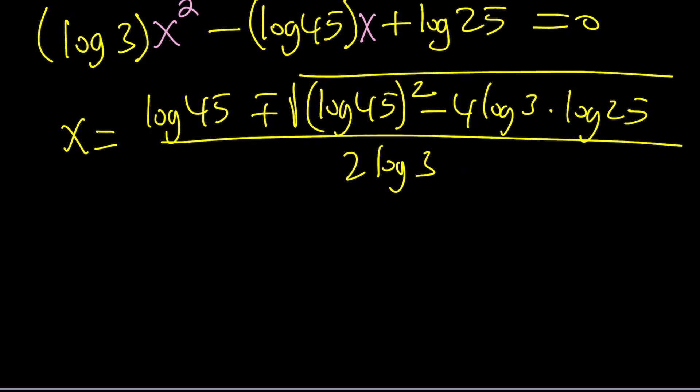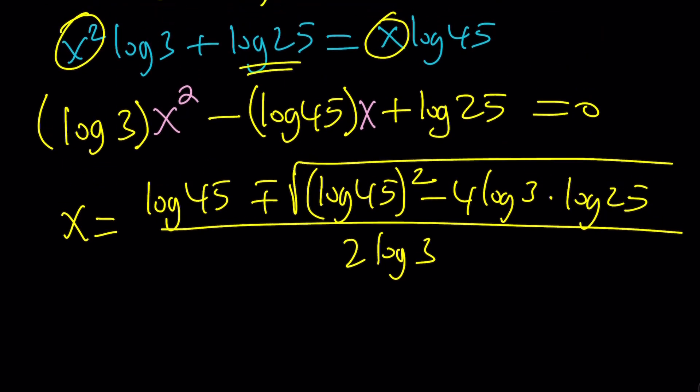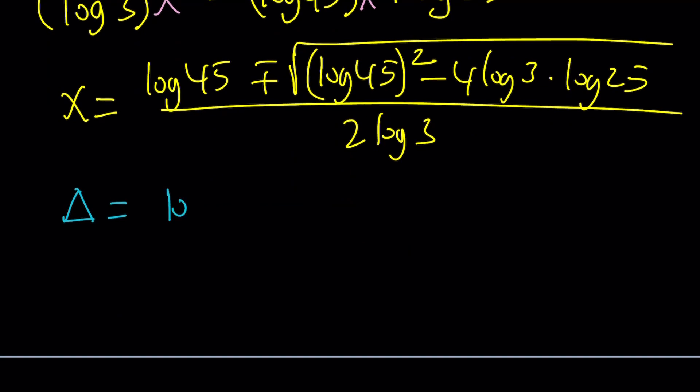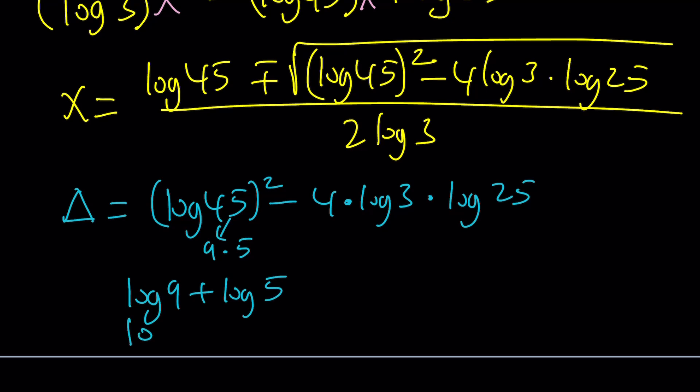At this point, this looks pretty complicated. Let's go ahead and focus on what's inside the radical, which we call the discriminant. So, in other words, the delta for this quadratic, we're going to write it as log 45 squared minus 4 times log 3 times log 25. One of the ways we can simplify this is probably break everything down. For example, 45 is 9 times 5, and then we can write this as log 9 plus log 5. And then, 9 is 3 squared, so we can write it as 2 log 3 plus log 5. Make sense? So I'm going to go ahead and take that and square it.